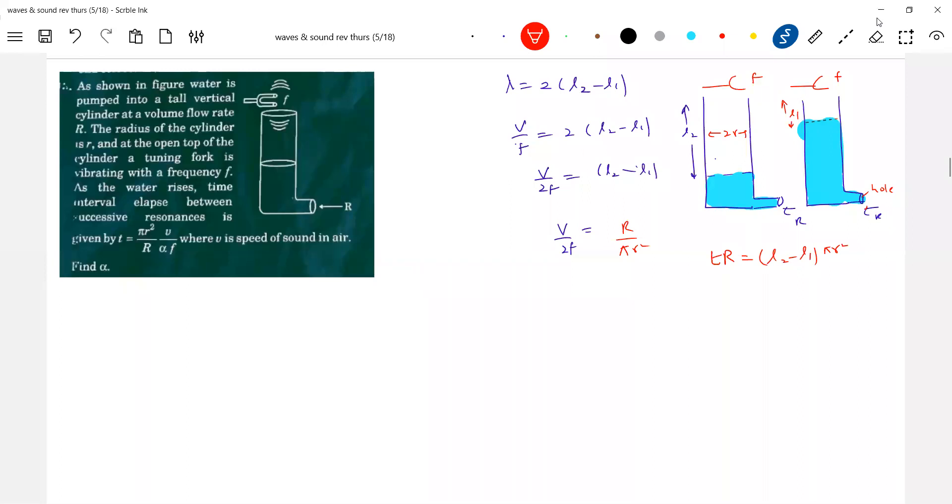So R by pi R square, so L2 minus L1 will be TR by pi R square. So expression for pi R square.